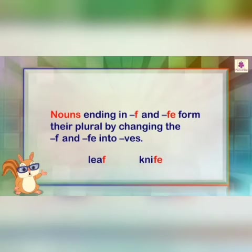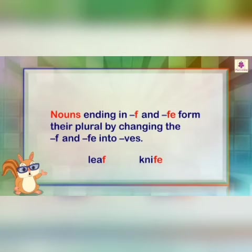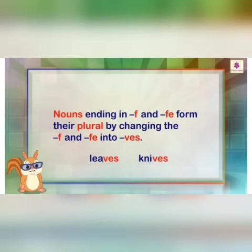Now, nouns ending in F and FE form their plural by changing F or FE into VES. If there is a noun ending with F or FE, we convert it to the plural form by placing VES. For example, the word leaf becomes leaves, and knife becomes knives.